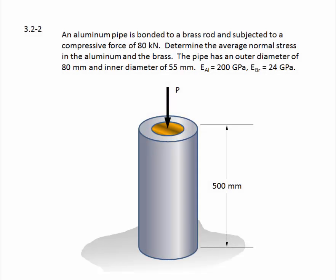Problem 3.2-2. An aluminum pipe is bonded to a brass rod and subjected to a compressive force of 80 kilonewtons. Determine the average normal stress in the aluminum and the brass. The pipe has an outer diameter of 80 millimeters and an inner diameter of 55 millimeters.